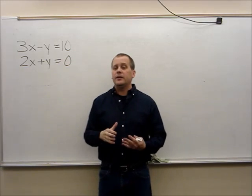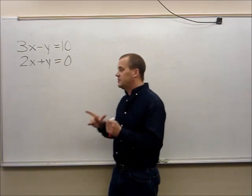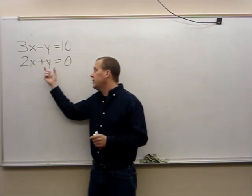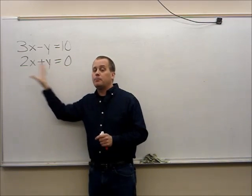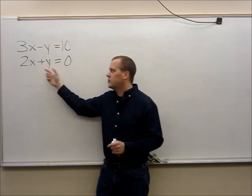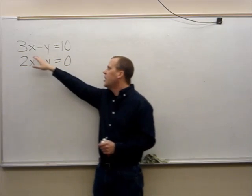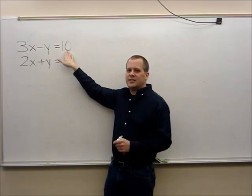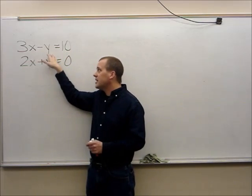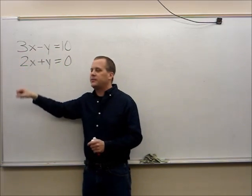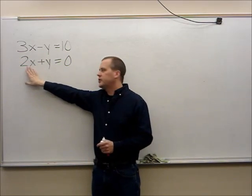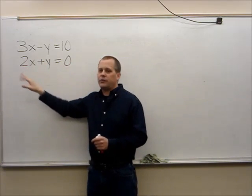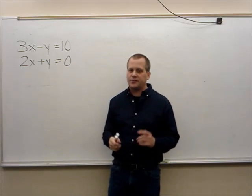With the elimination process, the time that you need to use it the most is when your x variable and your y variable are on both sides of the equals. So if I look at these two equations, I've got 3x minus y equals 10 — the x and y are on the same side of the equals. The second equation is 2x plus y equals zero, and they're both on the same side of the equals.